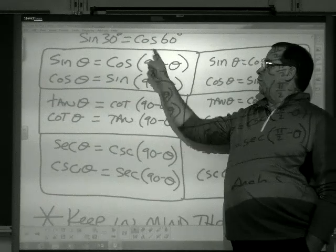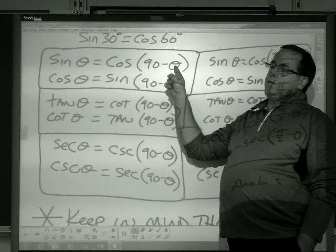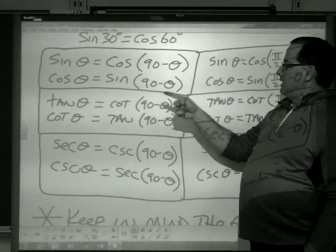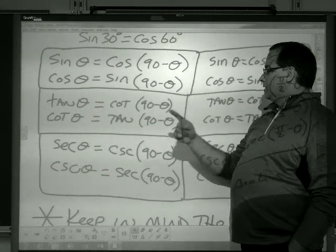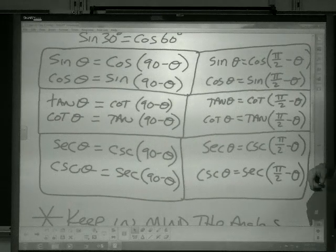Sine and cos are co-functions. The sine of one angle is the cos of 90 minus it. All right, this angle and this angle should add up to 90. Tangent and cotangent, they are co-functions. Secant and cosecant, they are co-functions.